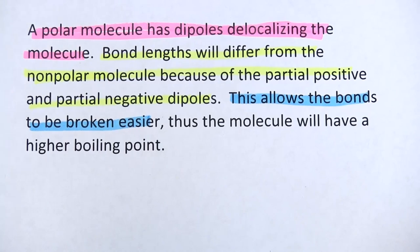Now we have an essay that unfortunately received zero out of six. Let's read it. A polar molecule has dipoles delocalizing the molecule. Bond length will differ from the nonpolar molecule because of the partial positive and partial negative dipoles. This allows the bonds to be broken easier. Thus, the molecule will have a higher boiling point.